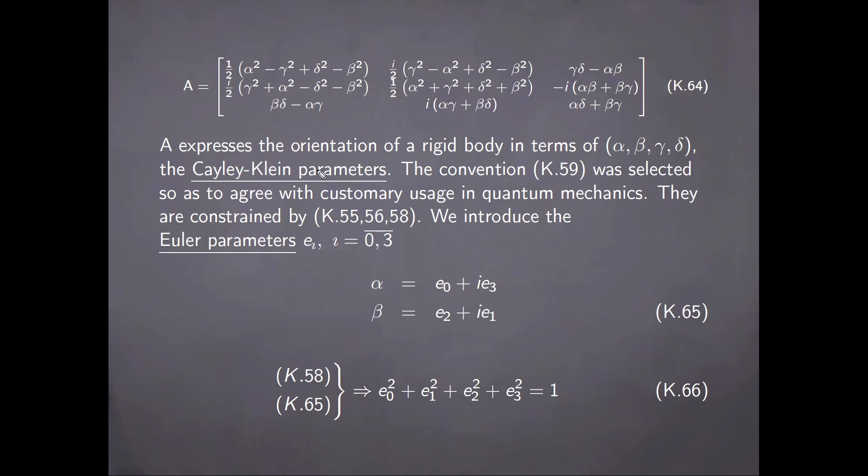Now, the Cayley-Klein parameters are constrained by equations 55, 56, and 58. In addition to that, we can also introduce the Euler parameters E of index i going from 0 to 3 through the definition here. So the Cayley-Klein parameters alpha and beta can be cast in the form of the real Euler parameters through these equalities. And then, from equation 58 and 65, we obtain this condition on the four Euler parameters.